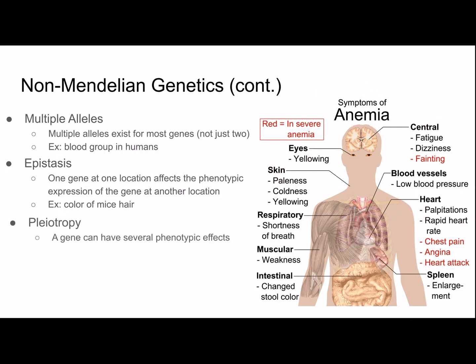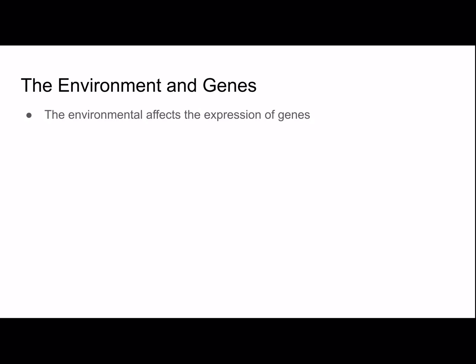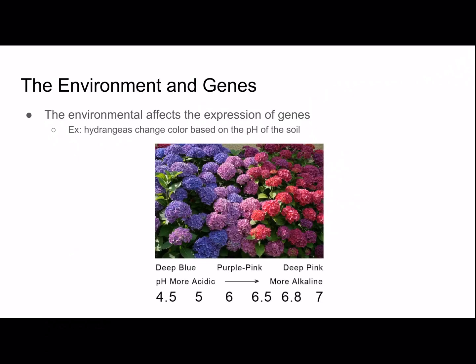Pleiotropy is where a single gene can have several phenotypic effects — for example, sickle cell anemia unfortunately leads to many effects. Polygenic inheritance is where two or more genes affect a single phenotype — that's the opposite of pleiotropy. A simplified example is skin color, which is affected by many genes, not just one. The environment also affects the expression of genes: hydrangeas change color based on the pH of the soil — more acidic soil makes them more blue, and more alkaline makes them more pink. So basically, phenotype is a combination of the environment and the genetic component — it's not just one or the other.